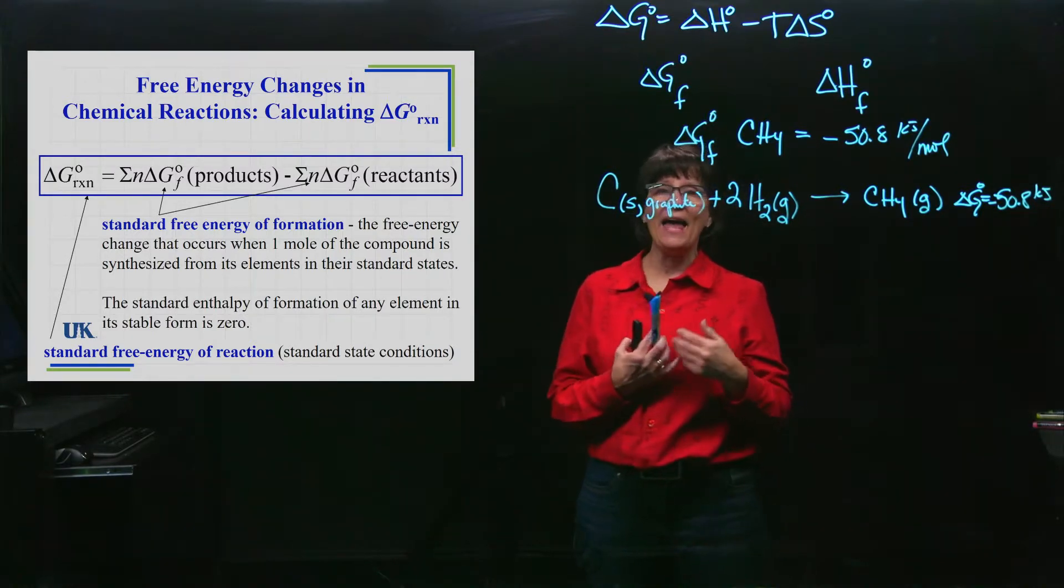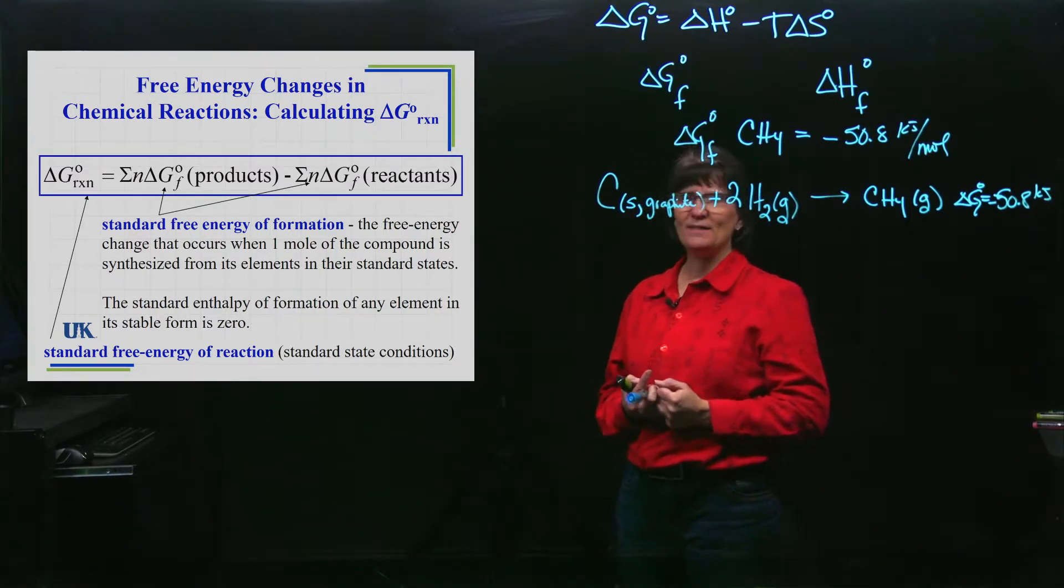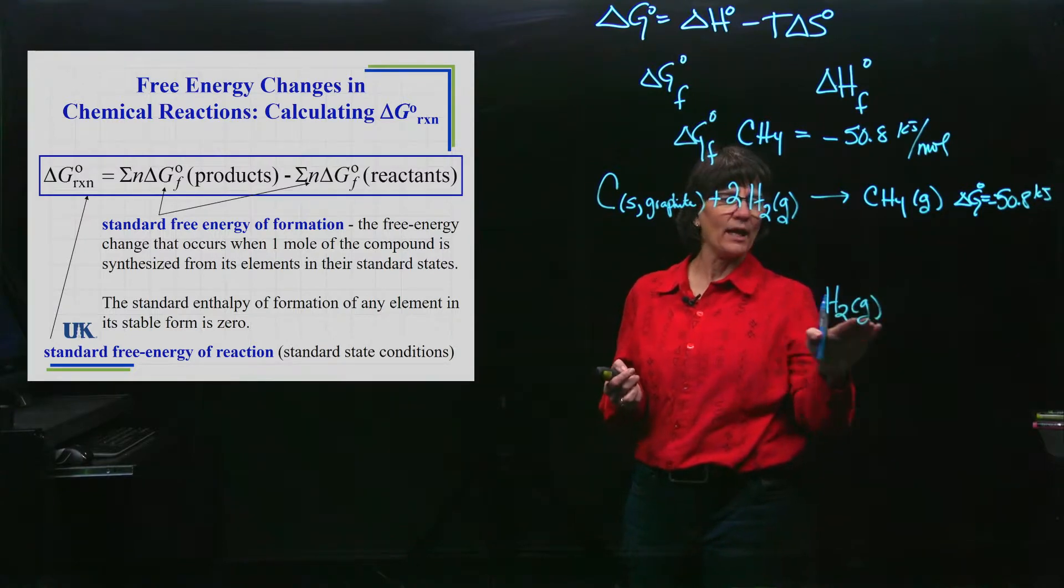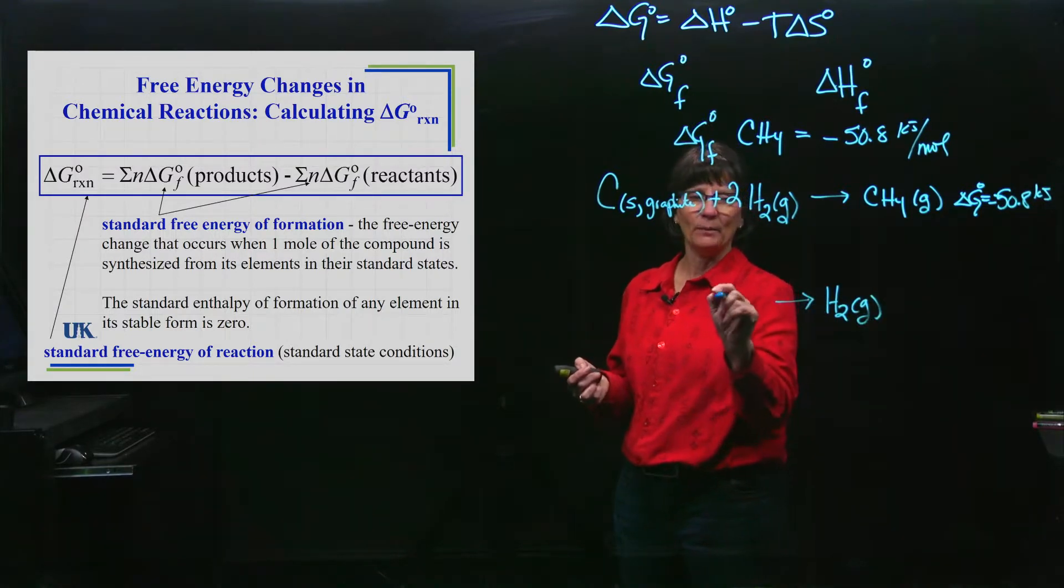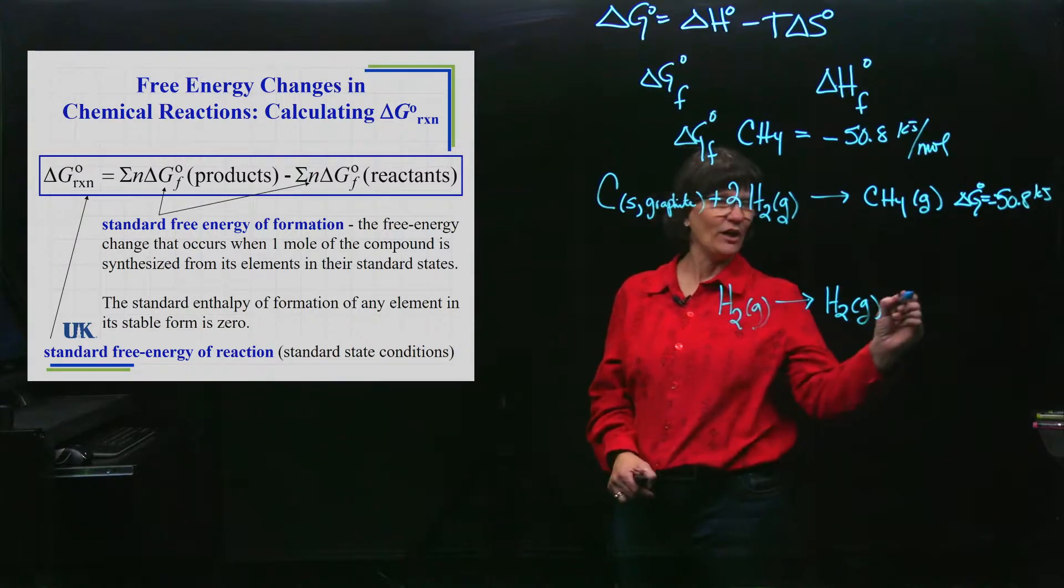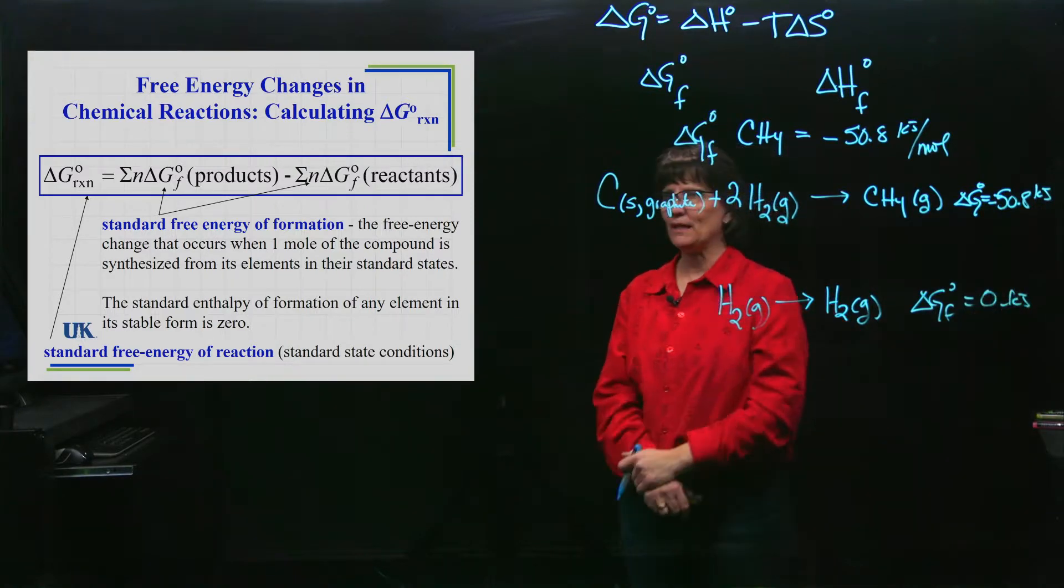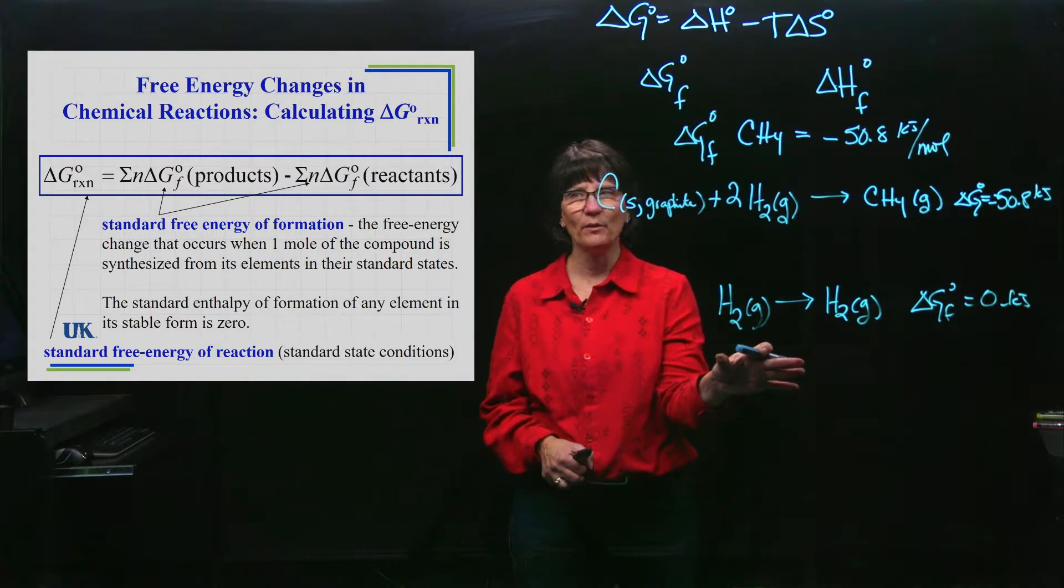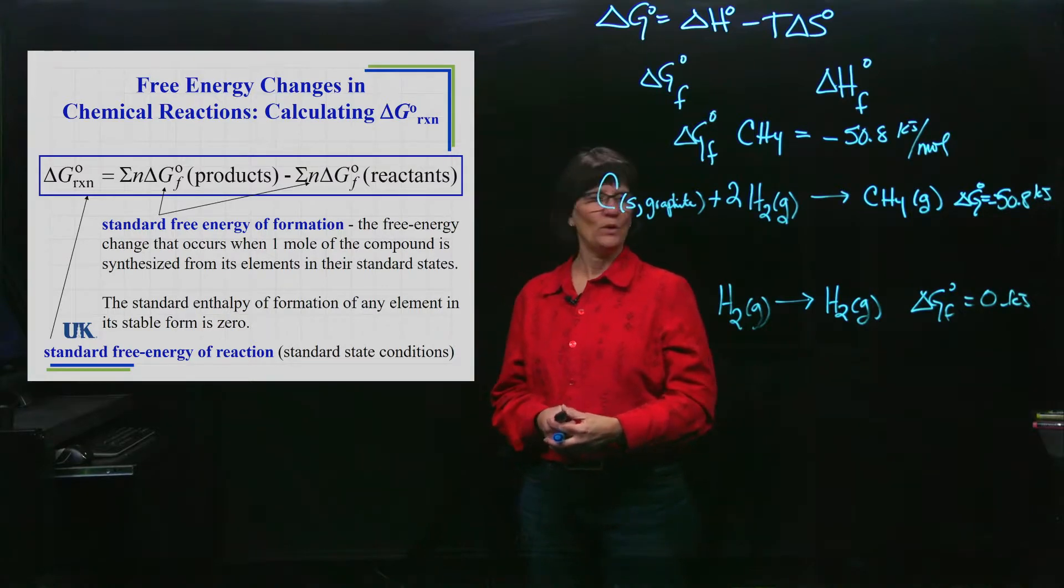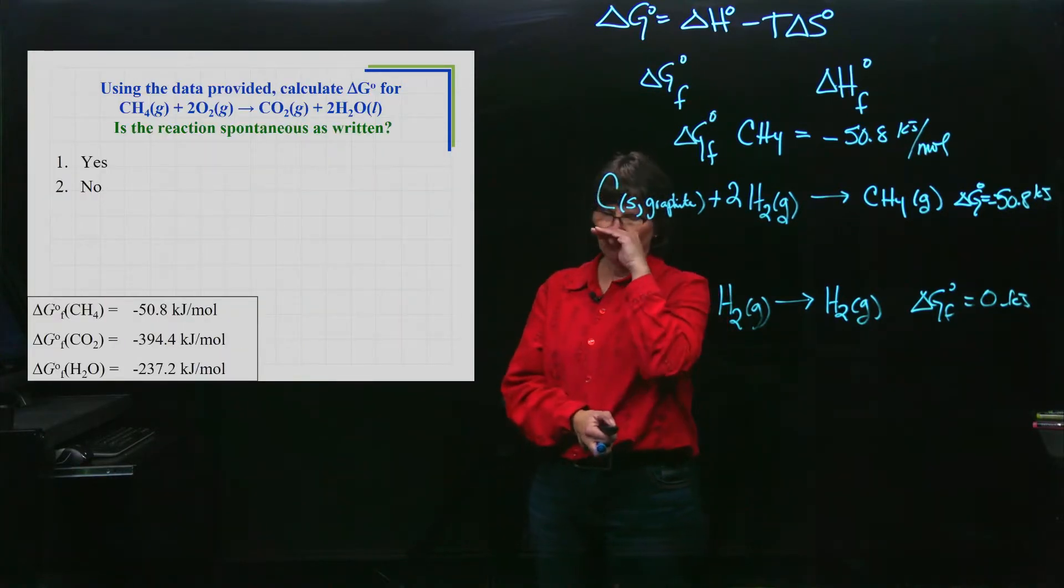This tells me by the definition that if I had an element and I want to know its Delta G of formation, it would be zero. Elemental hydrogen, if I wanted to make one mole of this from its element in its most stable form, did anything happen? Certainly not, so there's no Delta G for that; its value is zero. We don't typically give you those values. We expect you to know that. This was very similar. We did the same thing when we were talking about Delta H's of formation.